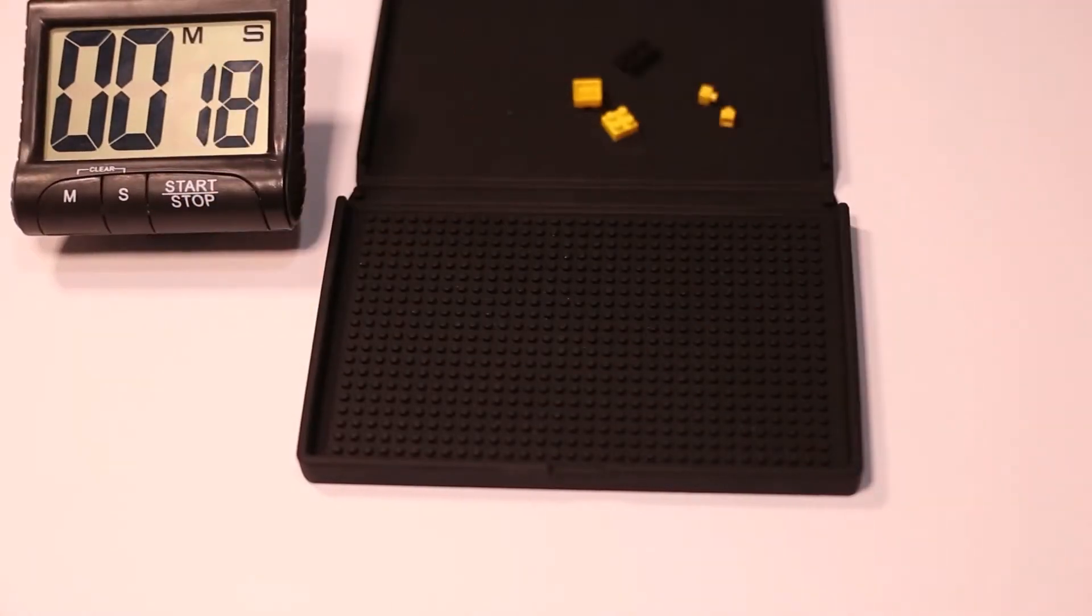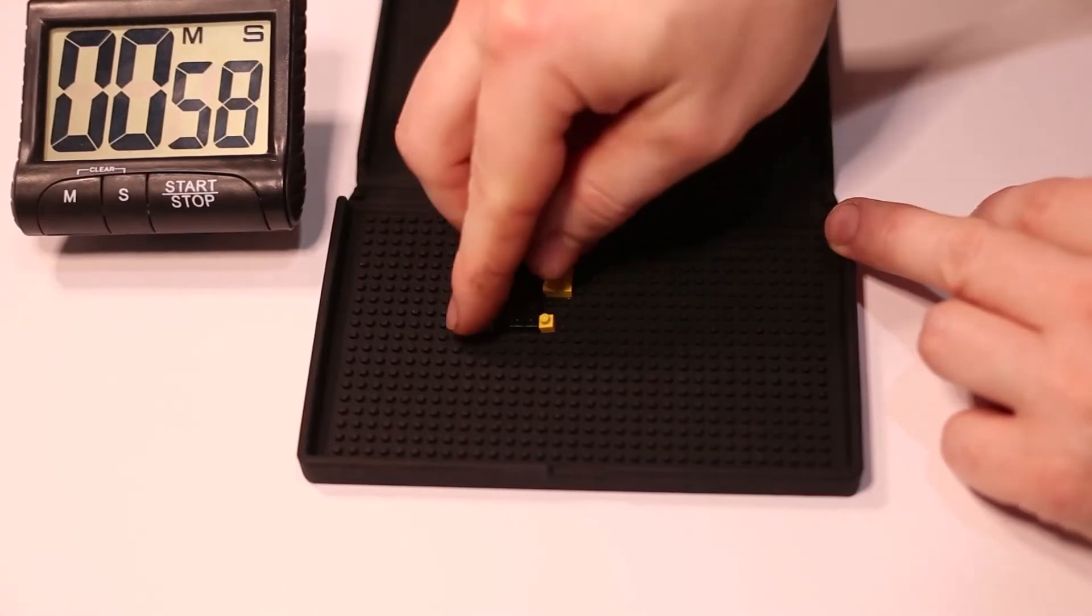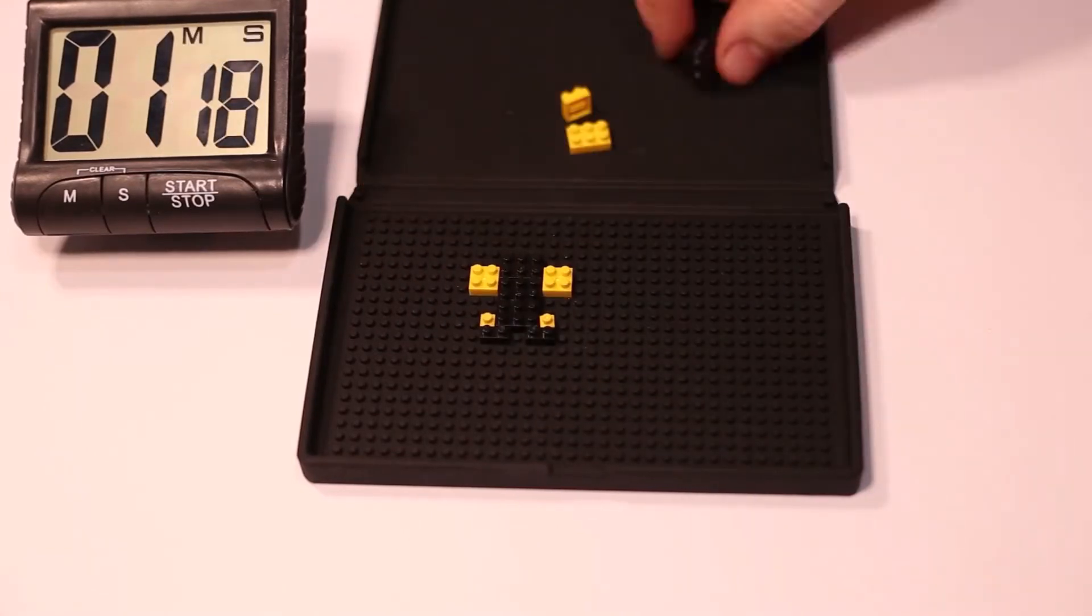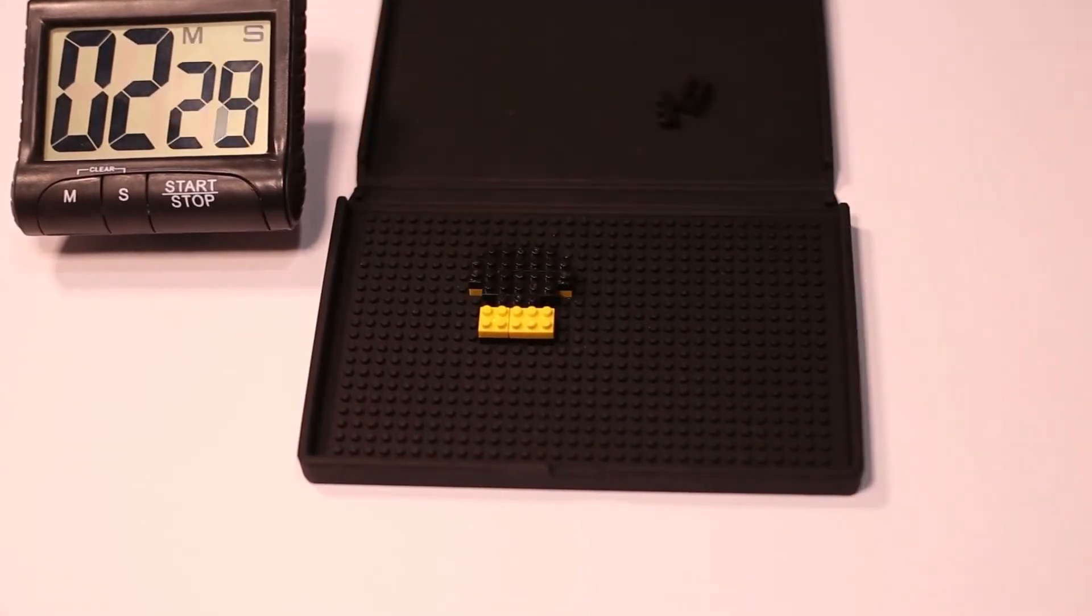Hey everyone, Wunderbricks here with another review and speed build. Today I'll be reviewing NanoBlox NBPM044 Umbreon. In this set there are 130 pieces with a difficulty of 2.